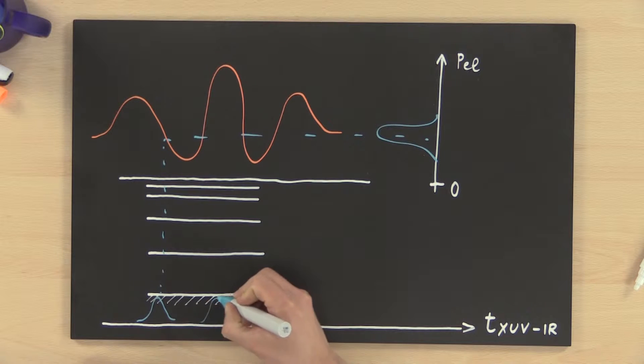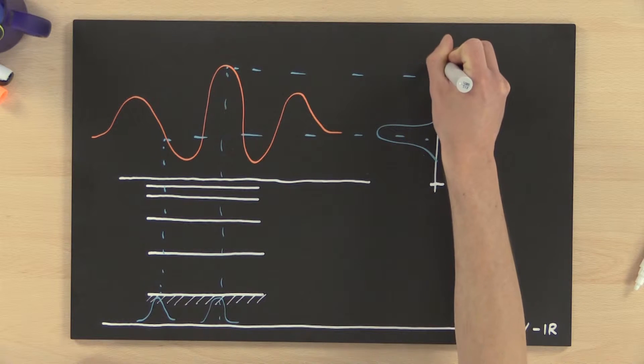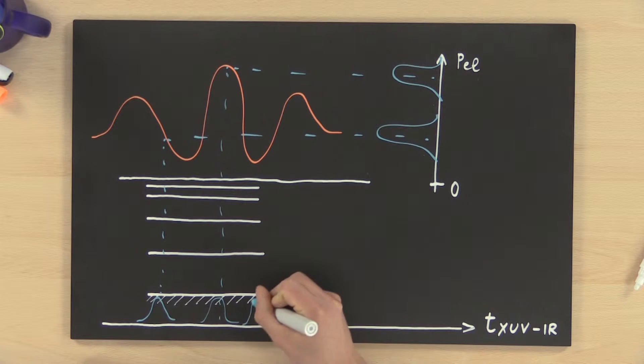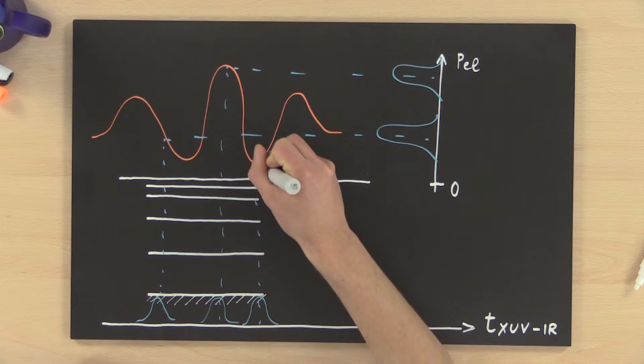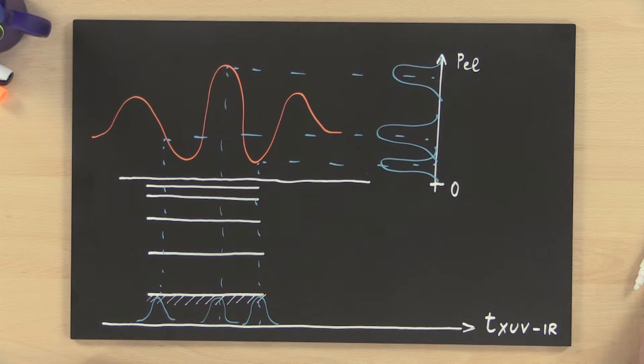If, and only if, the ionization process takes place within a small fraction of the optical cycle of the streaking field, the photoelectron momentum distribution wiggles up and down, varying the delay between the two pulses because of total momentum conservation.